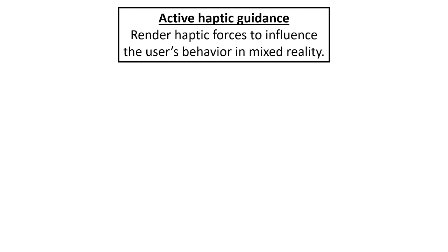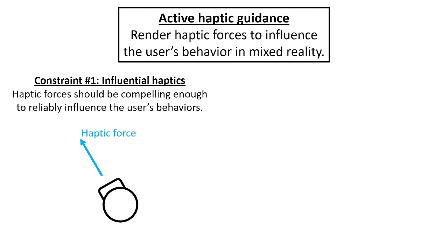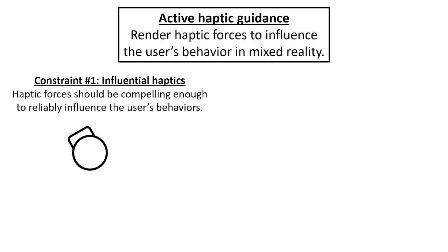We identified two main constraints that need to be fulfilled when implementing active haptic guidance. First is the influential haptics constraint, which simply means that the haptic forces that are rendered need to be realistic enough that the user actually feels compelled to change their behavior in accordance with the haptic forces. If the haptic forces do not match with what the user perceives in the virtual world, or if the haptic forces are not realistic, it is possible that the user may ignore them and we will fail to influence their behavior. Fulfilling this constraint largely depends on the mechanics of the haptic proxy and the virtual interaction.